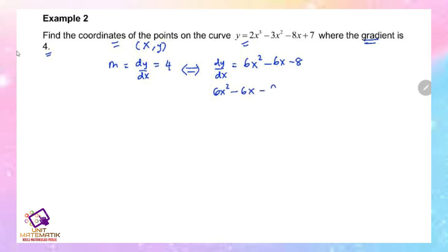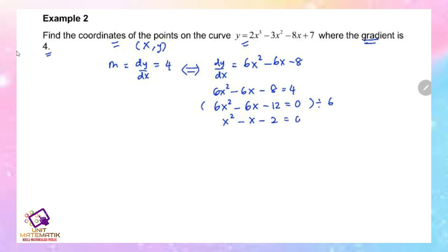We compare dy/dx to the gradient: 6x² - 6x - 8 = 4. Simplify to get the quadratic equation: 6x² - 6x - 12 = 0. All terms can be divided by 6, giving x² - x - 2 = 0.